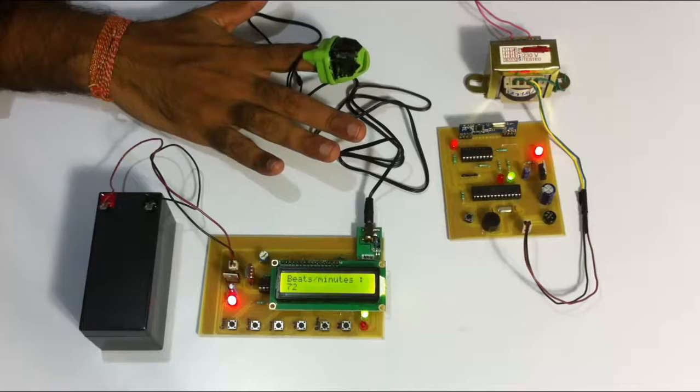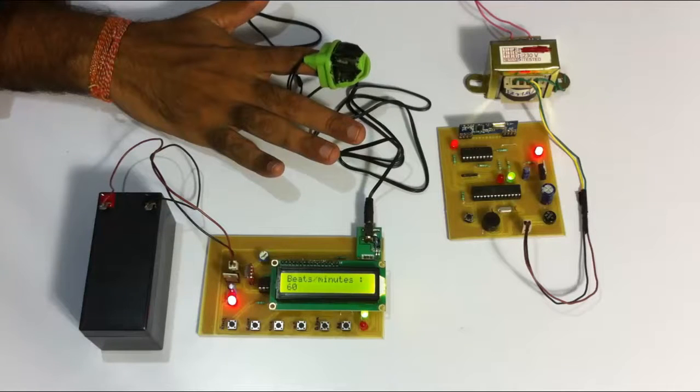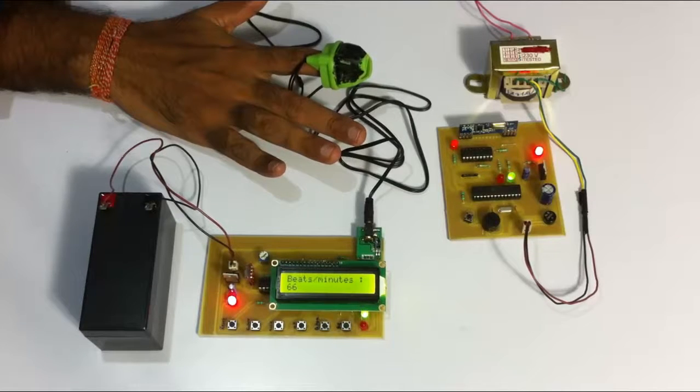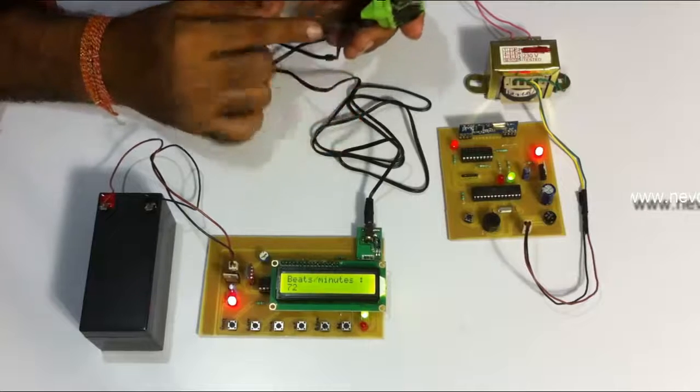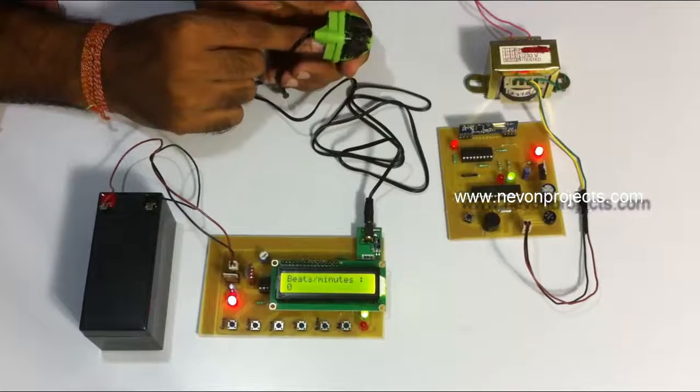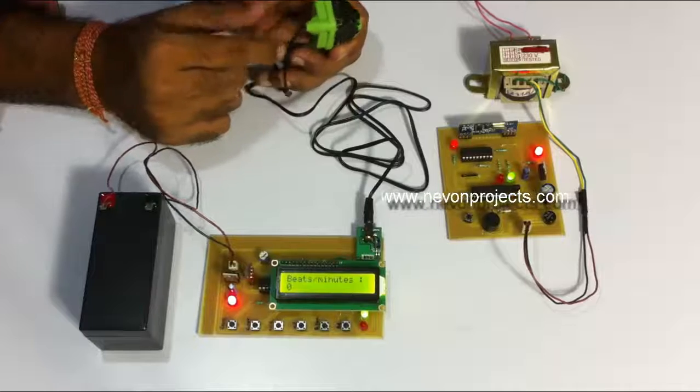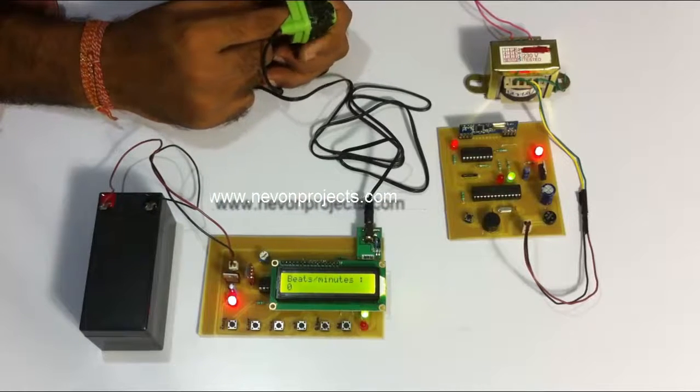As you can see the heart rate is now a bit above the set limit. It has come under the limit now. Now let's simulate lower heart rate by removing the sensor in intervals. We can't simulate that the heartbeat is going down by placing the finger there, so we have to demonstrate in such a manner.